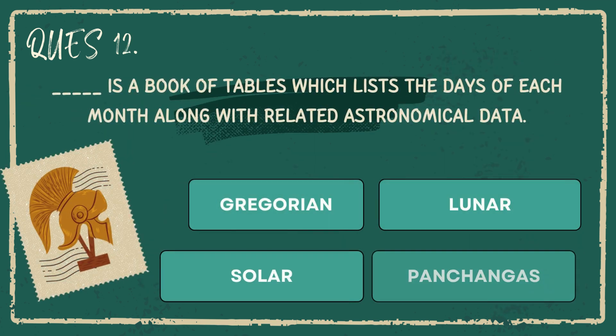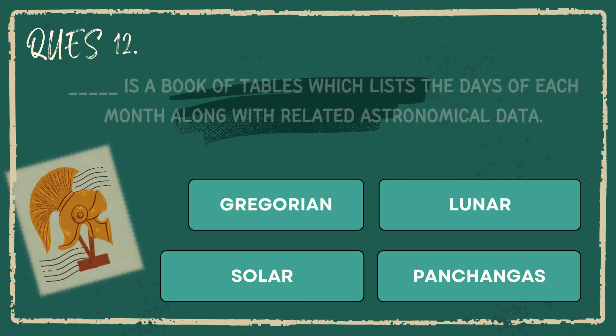Dash is a book of tables which lists the days of each month along with related astronomical data. Gregorian, Lunar, Solar, Panchangas.